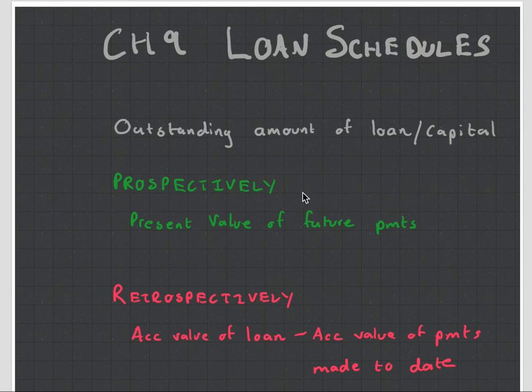So prospectively means that you take all the future values and you discount them to get the present value. So imagine if you see a timeline over here, prospectively means you calculate the value in the beginning at time zero.